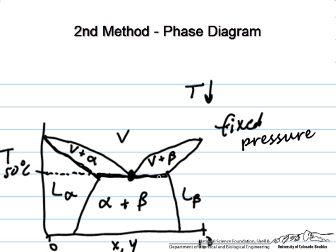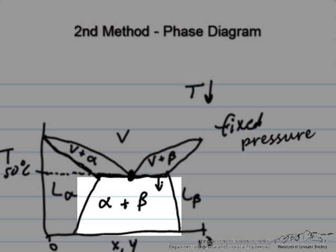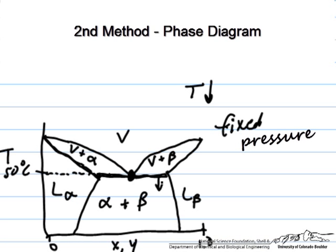So any decrease in the temperature when we are along this line will bring us into the two liquid phase regions. We can analyze this using either the Gibbs phase rule or a simple sketch of a phase equilibrium plot of temperature versus composition.